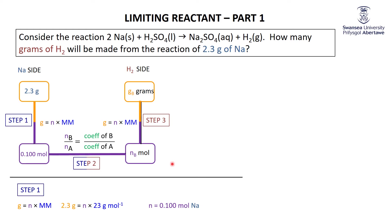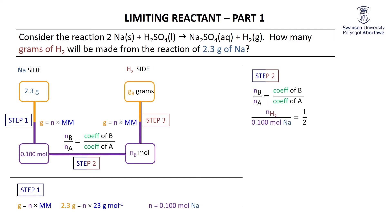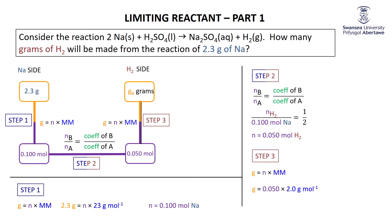Step two: going from moles of sodium to moles of H2, we use the ratio of coefficients. The coefficient of H2 is 1 and the coefficient of Na is 2, giving us 0.05 moles of H2. Step three: moles to grams — 0.05 times the molar mass of H2 (which is 2) gives us 0.1 grams of H2.